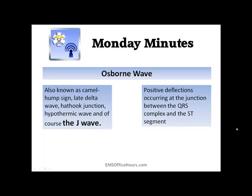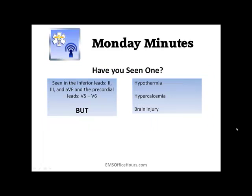The J wave is actually the positive deflection that happens at the junction between the QRS complex and your ST segment — right after the QRS wave. As for where you're going to see it, normally you might see it in leads 2, 3, AVF, and also V5 and V6.